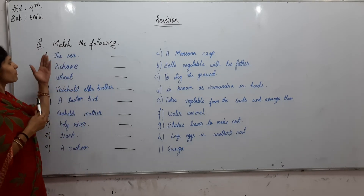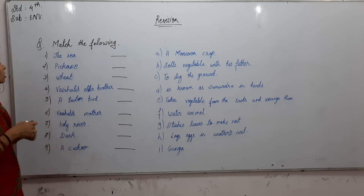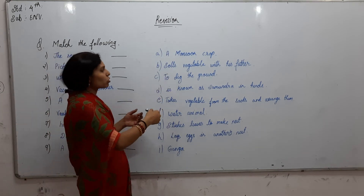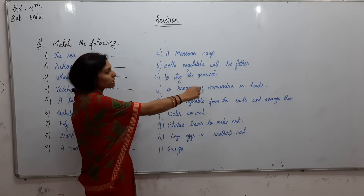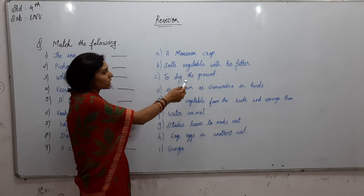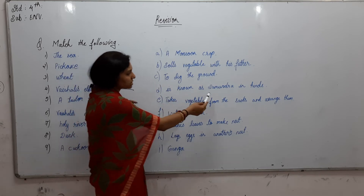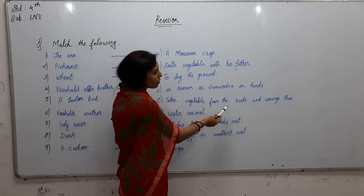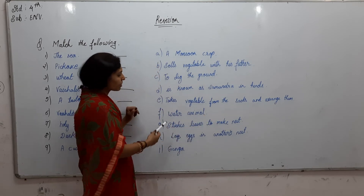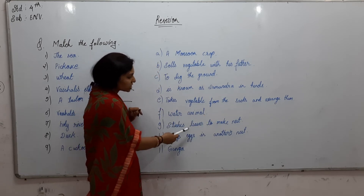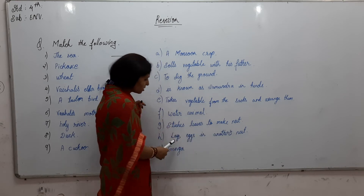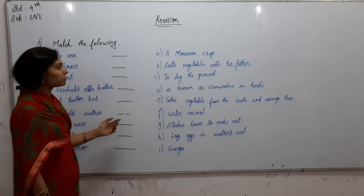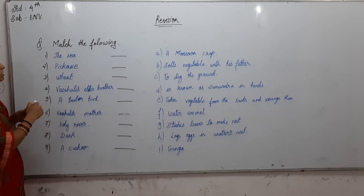The next question is 'Match the Following.' Let us first look at our options: A — monsoon crop, B — sells vegetables with his father, C — to dig the ground, D — is known as Samundra in Hindi, E — takes vegetables from the sacks and arranges them, F — water animal, G — stitches leaves to make nest, H — lays egg in another's nest. And Ganga is also given as an option.